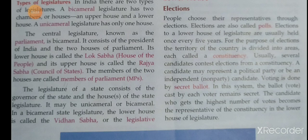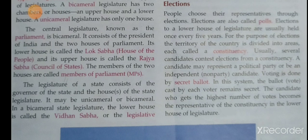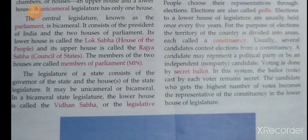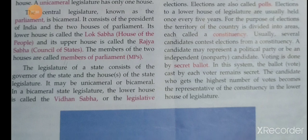All Indian citizens above the age of 18 can exercise franchise, meaning the right to vote. This is called universal adult franchise — anyone above 18 has the right to elect their representative.